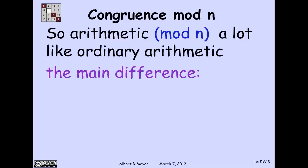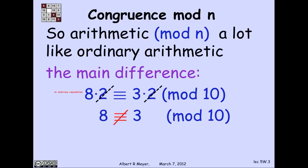But here's the main difference. Let's look at this one. 8 times 2 is 16, which means it's congruent to 6 mod 10, which is the same as 3 times 2. So 8 times 2 is congruent to 3 times 2. And you'd be tempted, maybe, to cancel the twos. What happens then? Well, then you could discover that you think that 8 is congruent to 3 mod 10, which it ain't.